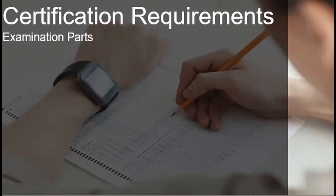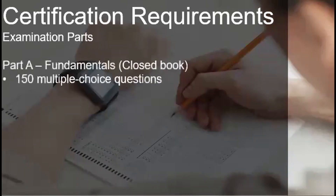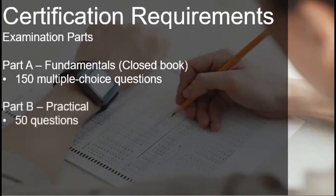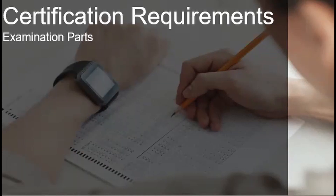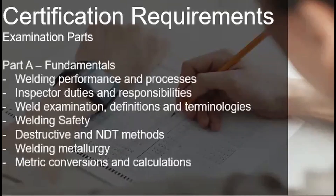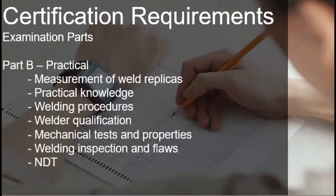Here are the different parts of the examination. The first part is the fundamentals which consists of 150 multiple choice questions. Part B is the practical part of the examination which consists of 50 questions. Part C is the open book code in which the examiner will select the applicable codes. Part A of the exam will test the candidate on the fundamentals of welding and its different processes. For the practical part, the candidates are tested with practical knowledge and different measuring tools.